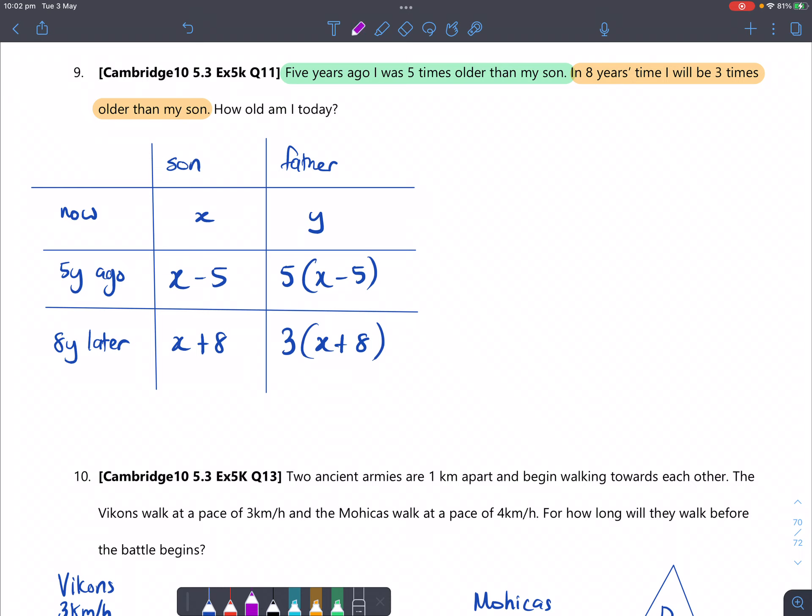But between these two ages, between five years ago and eight years after, if you think about it on a number line, if this is what's now and this is five years ago and this is eight years later, there's a difference of five years here and there's a difference of eight years here, which is a total difference of 13 years. So if you subtract the age eight years later by the age five years ago, you'll get 13.